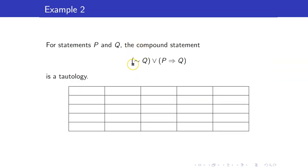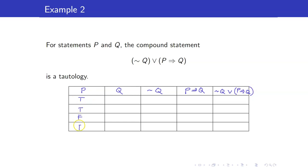Let us check that the compound statement 'not Q or P implies Q' is a tautology. We will need the components P, Q, not Q, and P implies Q. For P implies Q, this is only false when you have a true premise but a false conclusion.